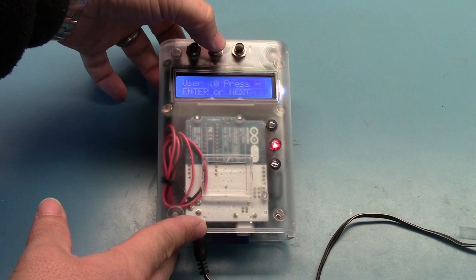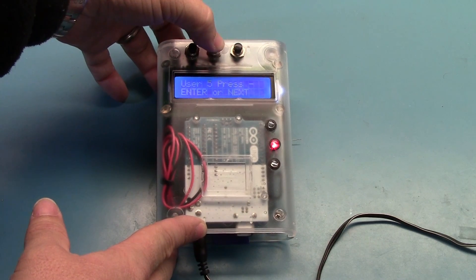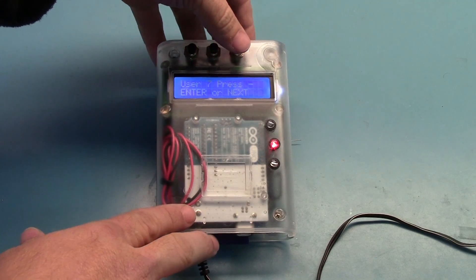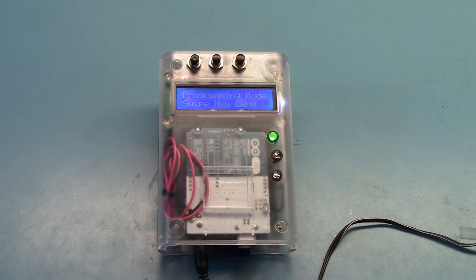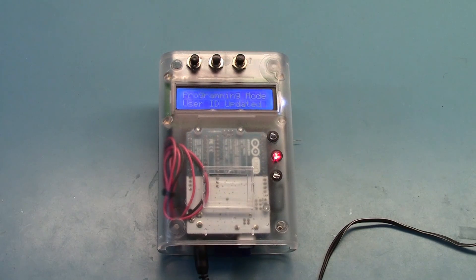And so I now have the ability to next through the different available users. Like I said, we have ten users. And it's letting us know to either hit enter or next. And so when we find a user that we want to program, say user seven in this case, we'll then hit enter. It lets us know that we're in programming mode, but we're ready to swipe. And so we're going to swipe a new card. It's going to write that new value to EEPROM. Let us know that it updated the user and go right back to a ready to read state.